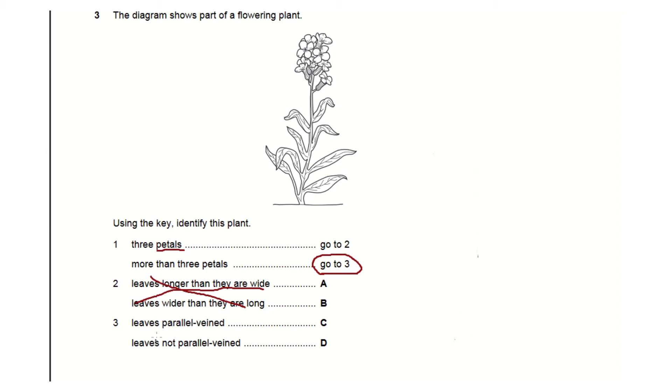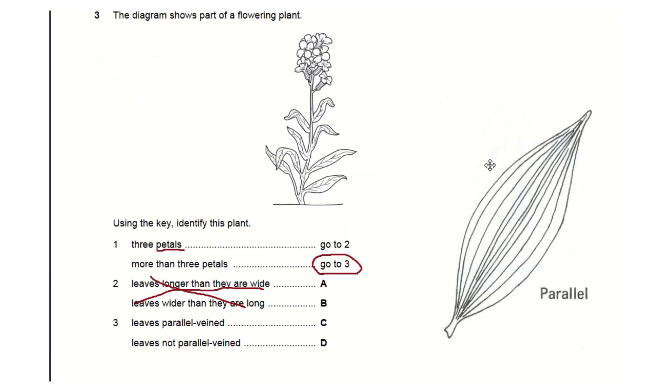Then in section three they ask if the leaves are parallel veined or non-parallel veined. It might be something you've forgotten, but a parallel veined leaf looks something like this. If you look at the leaves here, they're clearly not like that. So our leaves are not parallel veined, so the correct answer is D.